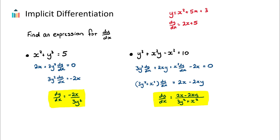In this video we are going to go through a brief overview of implicit differentiation and when and why we might need to use it. The basic idea is that we don't always get functions like y as a function of x — sometimes it's not this simple. We might get relations like these two examples here where we have x's and y's together in an equation, and if we want to find an expression for dy/dx we need to use implicit differentiation.